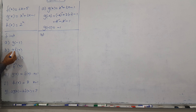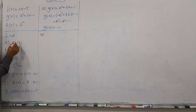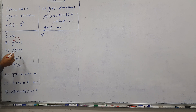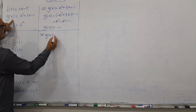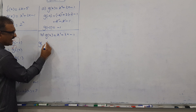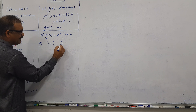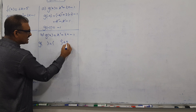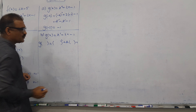Part B: We need to put function F inside function G — that is, find G of F of X. First, copy the G function as usual and replace every X with an empty space. We have two X positions, so we leave two empty spaces: 2 times empty space, plus 2 times empty space, minus 1.